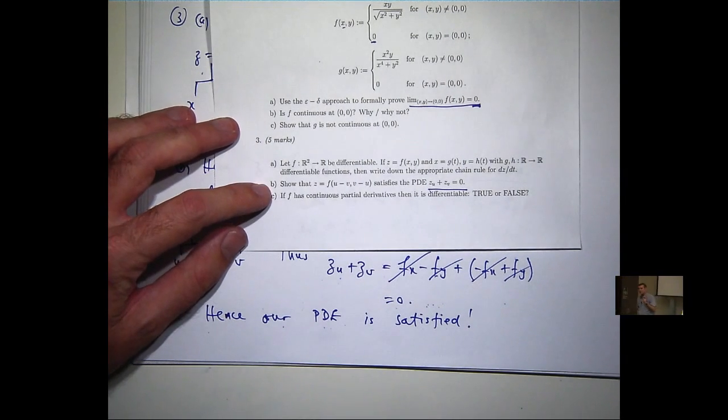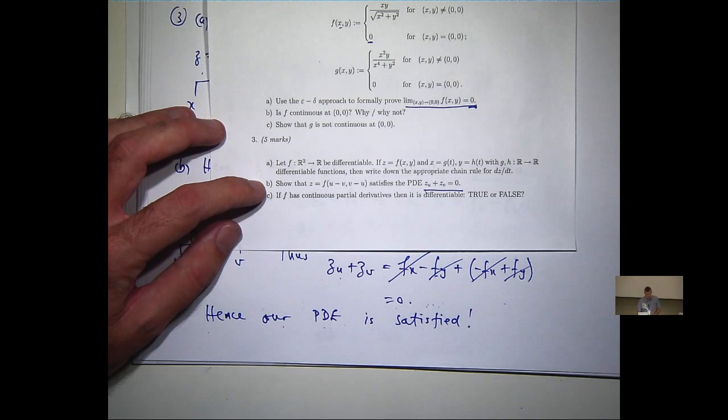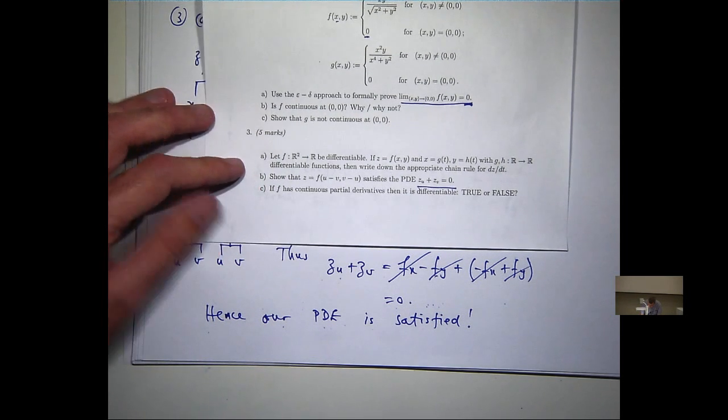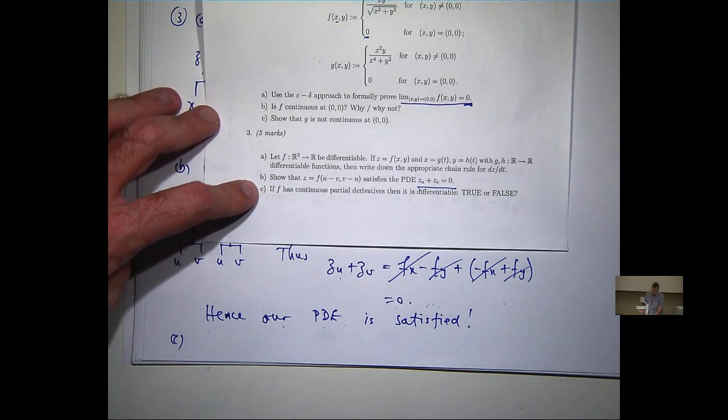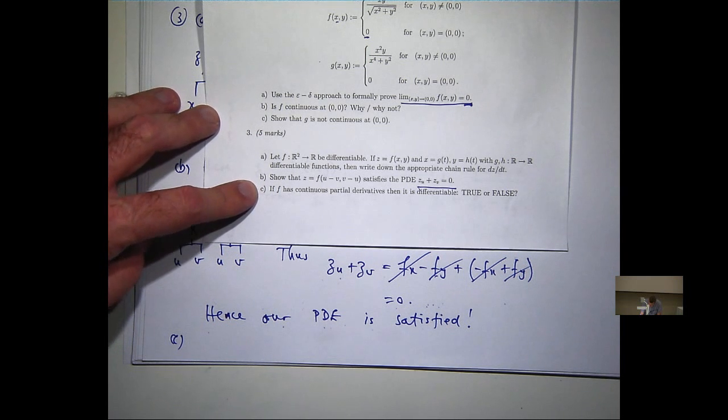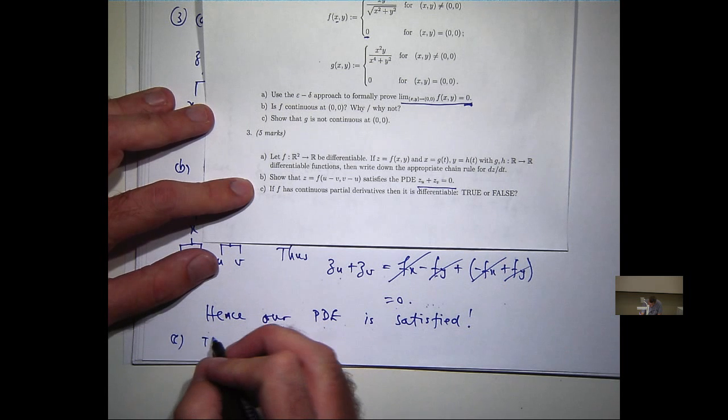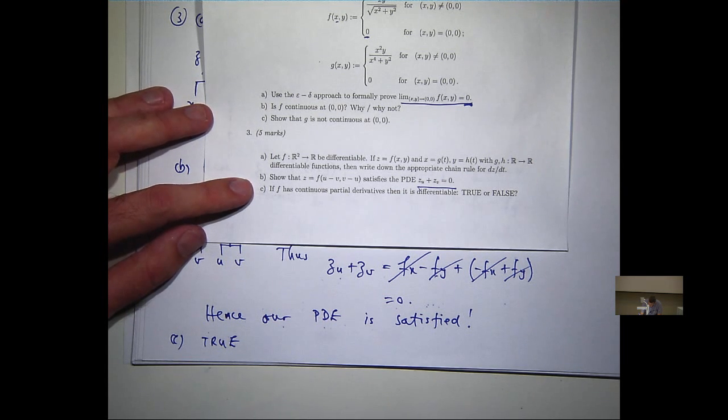Part C. If f has continuous partial derivatives, then f is differentiable. True or false? Who thinks it's true? Who thinks it's false? Who's not sure? It's true. If f has continuous partial derivatives, then it's differentiable. This is a very important result. So if you've got something like this in the exam, just write down true. No reasons are required. Okay, it's just a true or false.